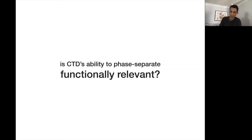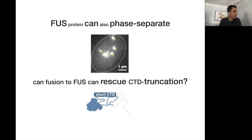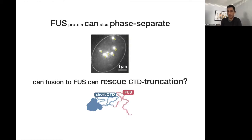The next question I wanted to ask is whether the CTD's ability to phase separate is functionally relevant for transcription. To try to answer this, I turned to a different phase-separating protein called FOS. This protein has been studied for its ability to phase separate. The question becomes: if I have a CTD truncation strain that grows slower and transcribes less efficiently, and I fuse this phase-separating protein FOS — different in sequence but similar in chemical properties, amino acid content, and intrinsic disorder — can this rescue the transcription and growth phenotype?